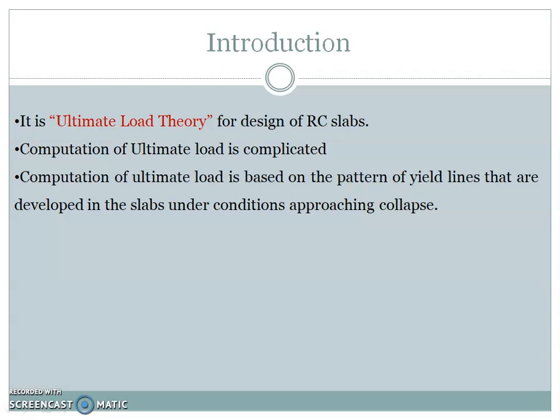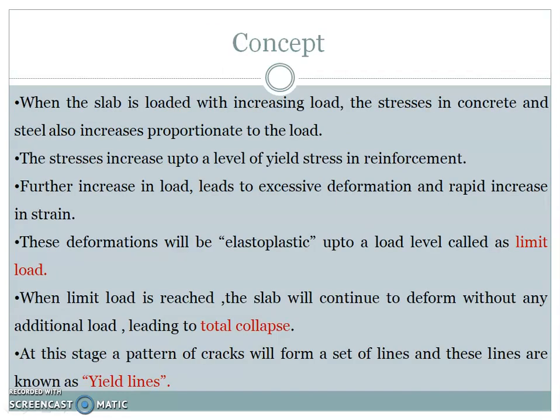When the slab is fully loaded with ultimate load, reinforcement and concrete can take stresses up to the load level corresponding to yield stress in reinforcement. If the load is further increased, excessive deformations and rapid increase in strain will result. These deformations will be elastoplastic up to a load level called the limit load. When limit load is reached, the slab will continue to deform without any additional load, leading to total collapse. At this stage, a pattern of cracks will form a set of lines known as yield lines, resulting in a mechanism leading to total collapse of the slab.